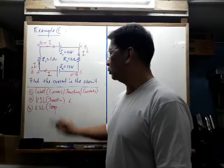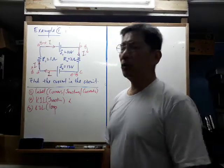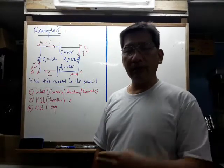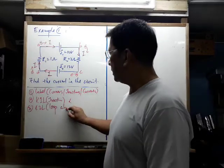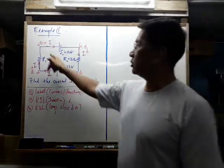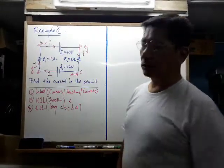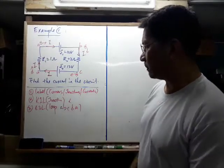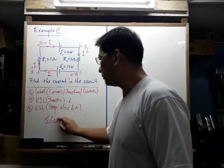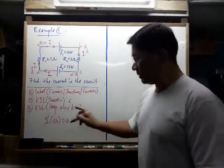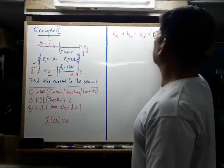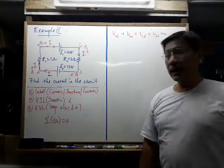For the second law, you need to name the loop — you don't want people to guess what you're doing in your calculation, because if you let people guess, they'll let you guess your own marks. So: A, B, C, D, back to the same original starting point — going clockwise. You can go anti-clockwise, but be consistent. The second law says the total change in potential must equal zero: V_AB + V_BC + V_CD + V_DA = 0.